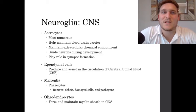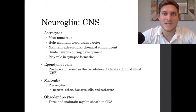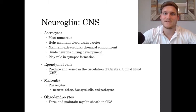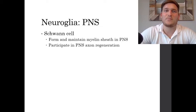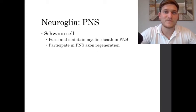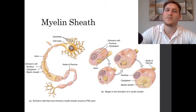Then we have oligodendrocytes, which are going to be really important for the formation of what's called the myelin sheath around neurons. This myelin sheath is going to be very important for transporting messages quickly. In the peripheral nervous system, we have neuroglia called Schwann cells, and these help form the myelination in certain neurons of the peripheral. So to note: oligodendrocytes form the myelin sheath in the central nervous system, and Schwann cells form the myelin sheath in the peripheral nervous system.